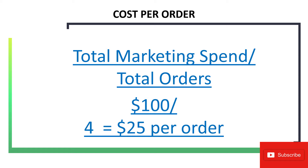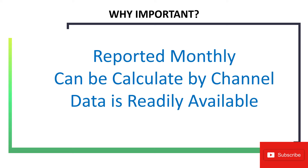Now the reason why this metric is important: you can calculate it on a monthly or annual basis; it can be calculated by individual advertising channels so you can compare your omni-channel marketing to see if certain channels are more effective at generating orders; and the data is readily available. Even with a basic installation on your website metrics, you will have your total number of orders and your total marketing spend.